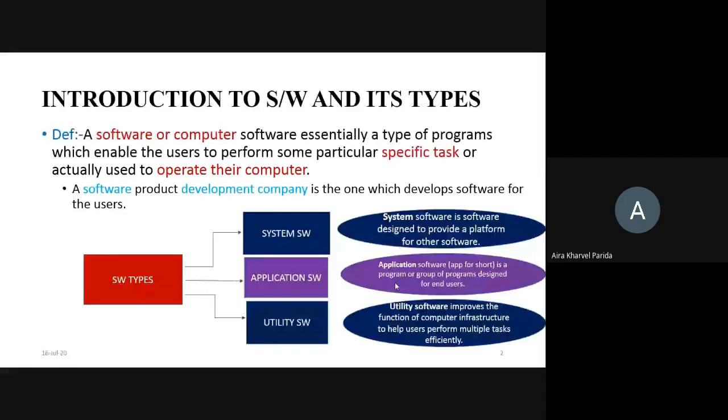Coming to the third category, utility software. Utility software may be like your antivirus or firewall. Whenever you are using the internet, safety features must be there. Currently lots of antivirus software are available in the market — you just install that and use your computer without any tension, knowing that if you have installed the antivirus, nothing will happen to your system. On a broader note, application and utility can be considered as a single type. If anybody has any doubt, please write in the comments.